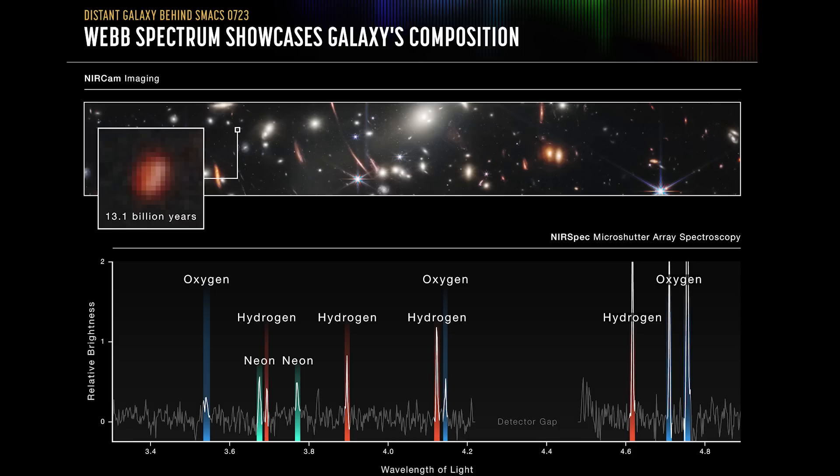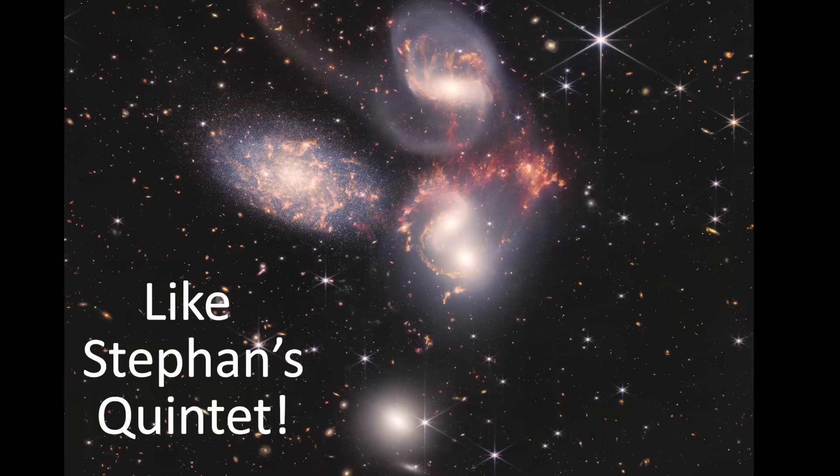We're learning about the formation of the earliest galaxies, and this can in turn teach us about how they evolve and compare to the more nearby spirals and ellipticals we see in the modern universe.